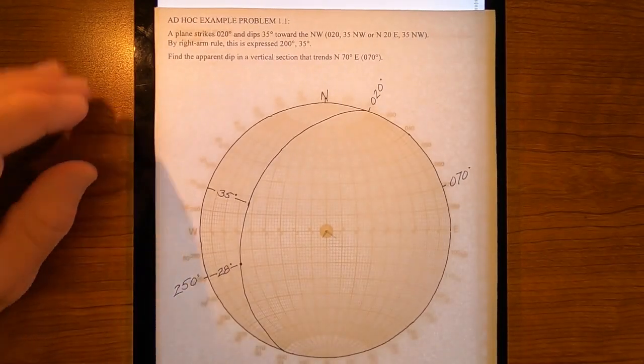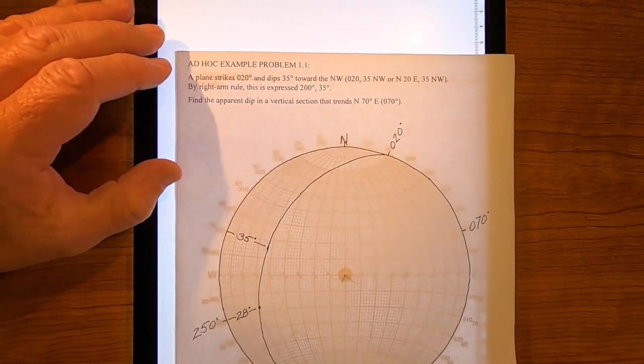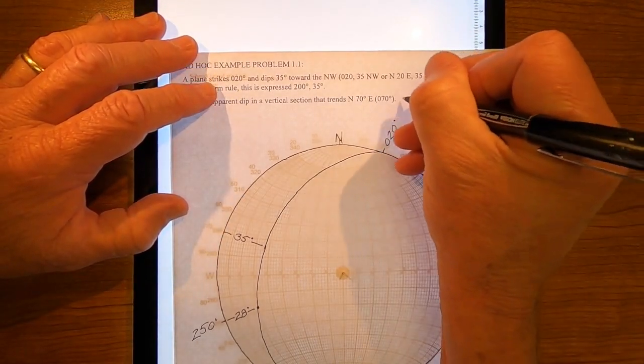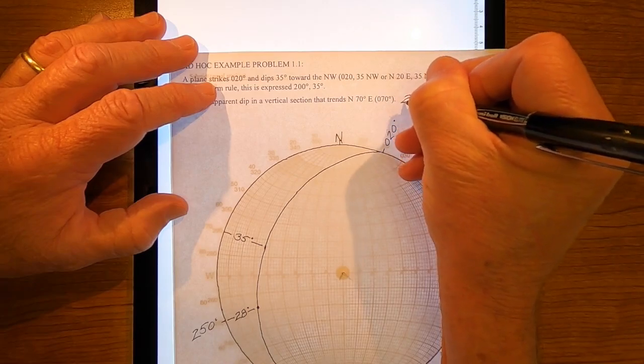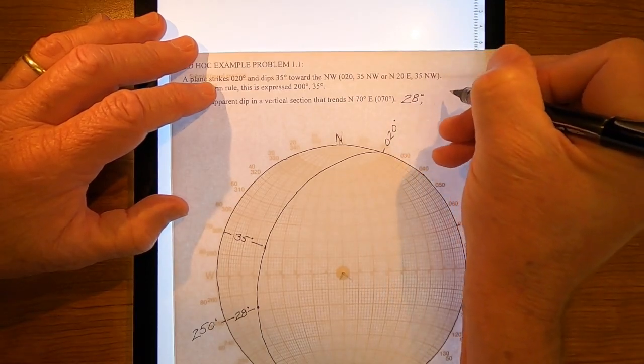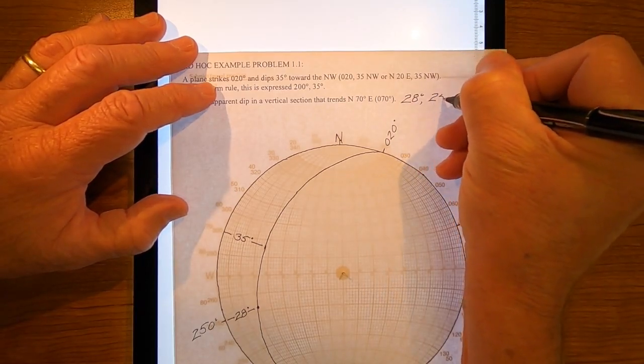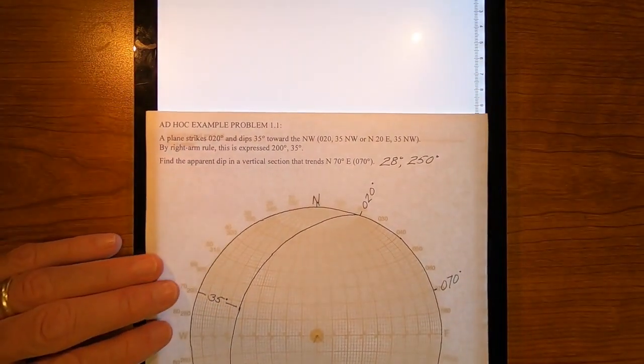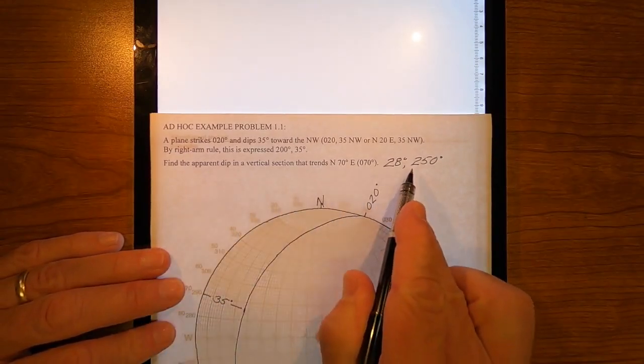And so, this apparent dip, the answer really should be expressed as 28 degrees, but in the direction two five zero. And that would be my expression of that answer.